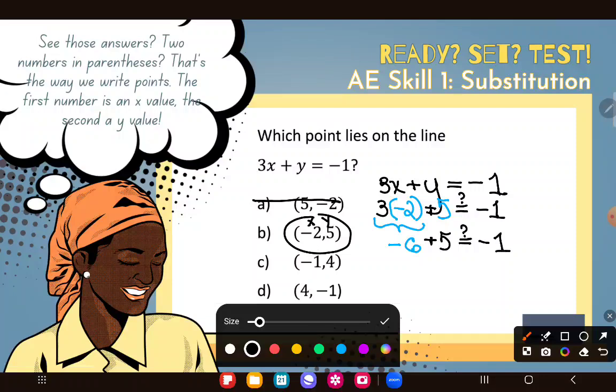If I owe you $6 and I have a 5, start paying it off, I'm going to pay down my debt. Negative 5, negative 4, negative 3, negative 2, negative 1. I'm only going to owe you $1. And is that equal to negative 1? Heck yeah, it sure is. That checks out. This point is on the line. That was really all we needed to do.